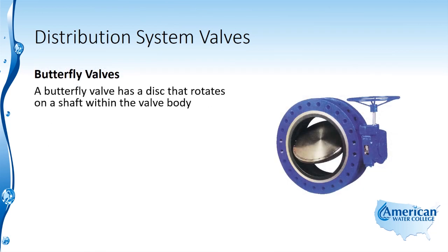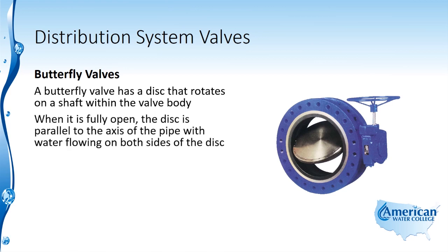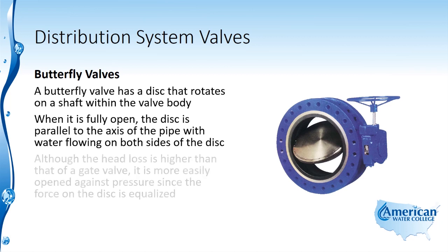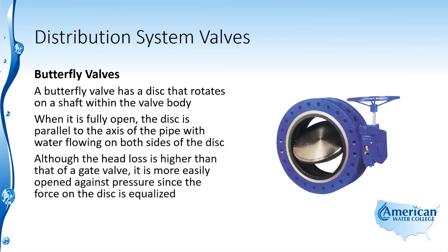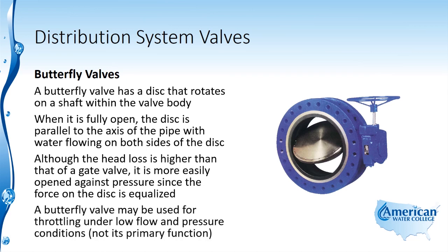A butterfly valve has a disc that rotates on a shaft within the valve body. When it is fully open, the disc is parallel to the axis of the pipe with water flowing on both sides of the disc. Although the head loss is higher than that of a gate valve, it is more easily opened against pressure since the force on the disc is equalized. A butterfly valve may be used for throttling under low flow and low pressure conditions, but this is not its primary function.